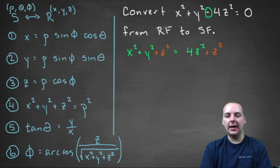But now the left-hand side is x² + y² + z², which I can convert to a ρ², and that's really good. So we have ρ² = 5z².